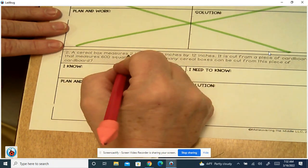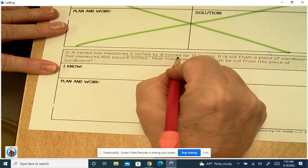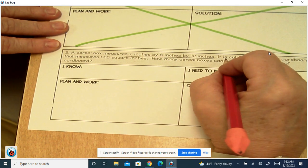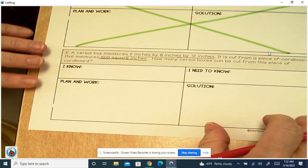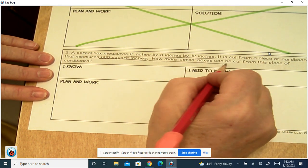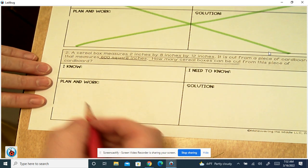A cereal box measures 2 inches by 8 inches by 12 inches. It is cut from a piece of cardboard that measures 600 square inches. How many cereal boxes can be cut from this piece of cardboard?